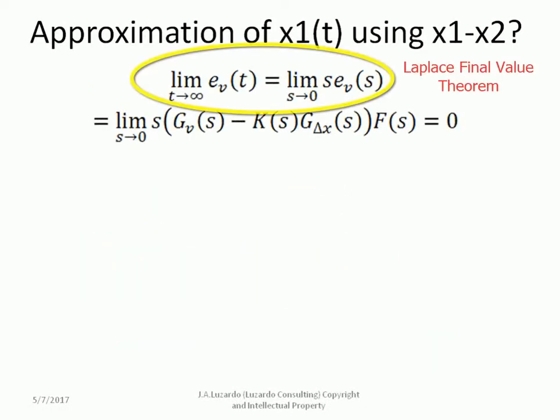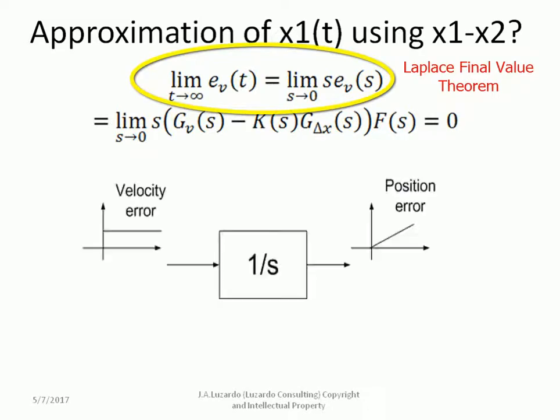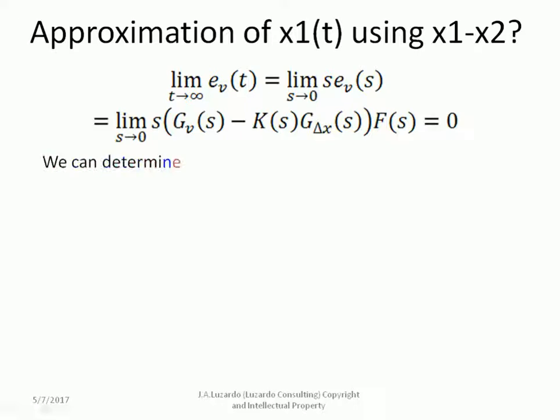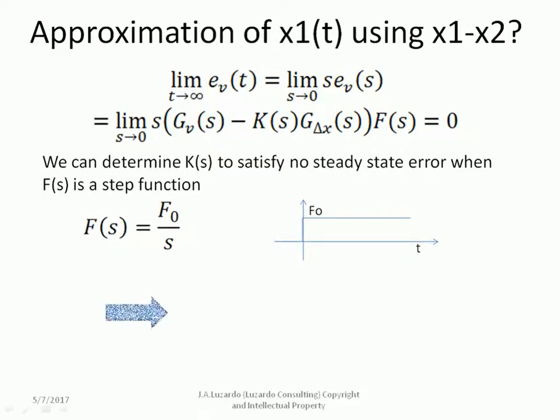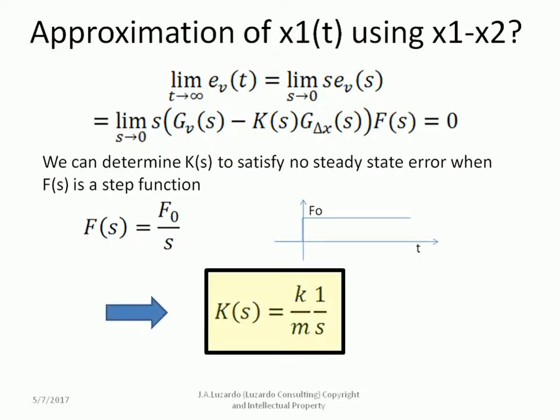It's important to realize that the steady state velocity error must be zero. For example, if there is a constant velocity error in steady state, the second integrator will integrate this error and produce a position error that will drift linearly from its ideal value. We can determine Ks to satisfy no steady state error when Fs is a step function. In this case, Ks is given by the following expression.